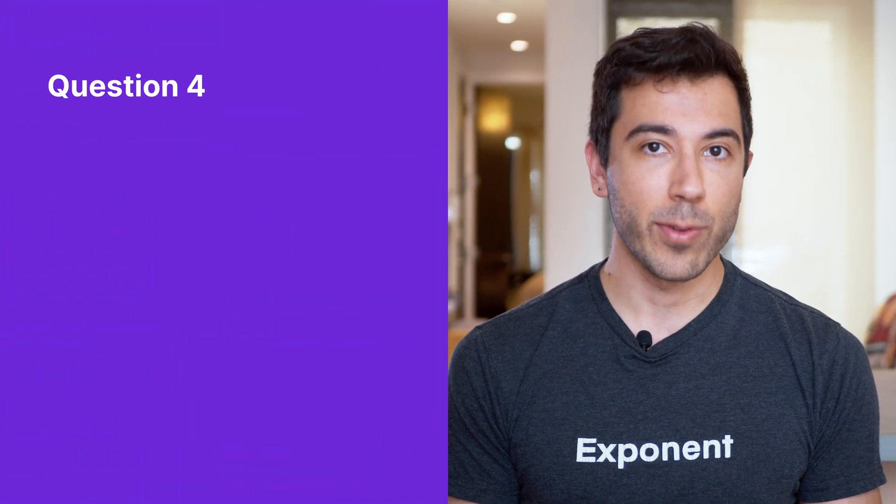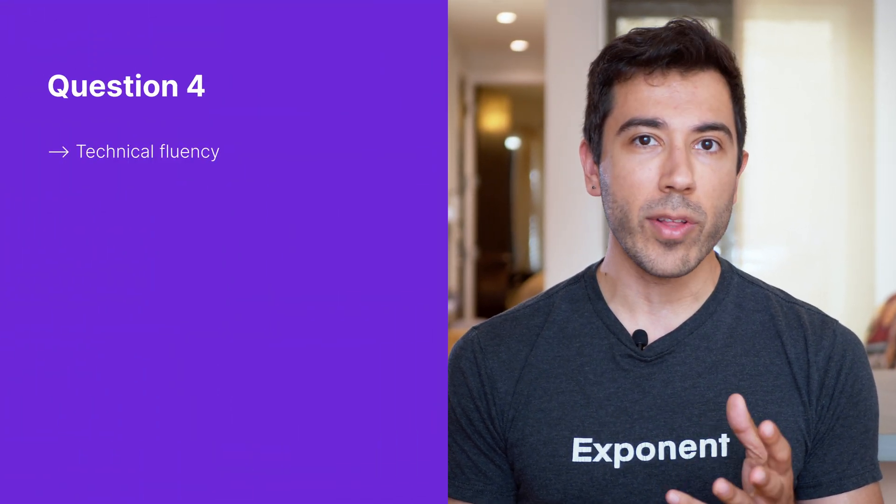Number four: technical fluency. Your interviewer wants to understand that you know how to take your technical knowledge and translate it into layperson speak — for example, tell me about a time when you had to explain a technical concept to a non-technical person. Your interviewer wants to make sure that if you join their company, you'll be able to collaborate not just with engineers, but with folks in various divisions who may not have the same technical knowledge. This is an important skill in any software engineering role and often comes up in behavioral interview questions.